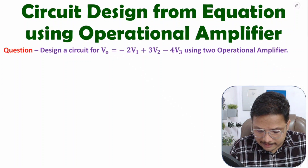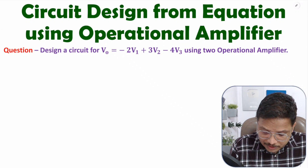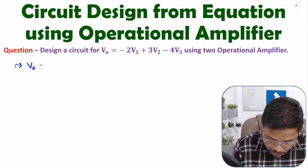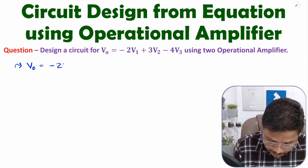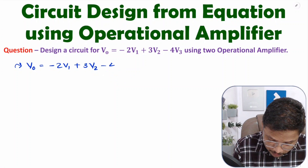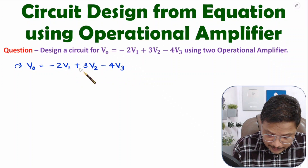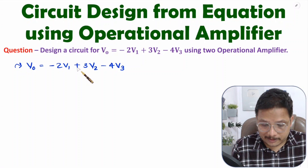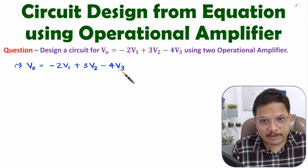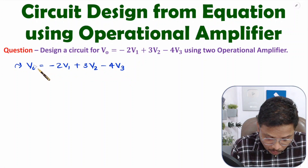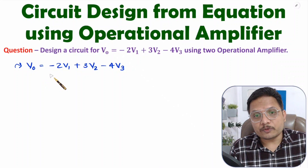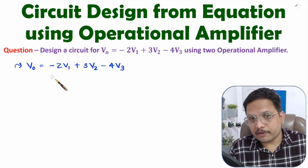First, you need to understand this equation: V0 equals minus 2V1 plus 3V2 minus 4V3. This equation has three inputs V1, V2, V3. V1 and V3 have negative polarity and V2 has positive polarity. Since V1 and V3 have negative polarity, we can obtain V0 using scaling with inverting configuration.